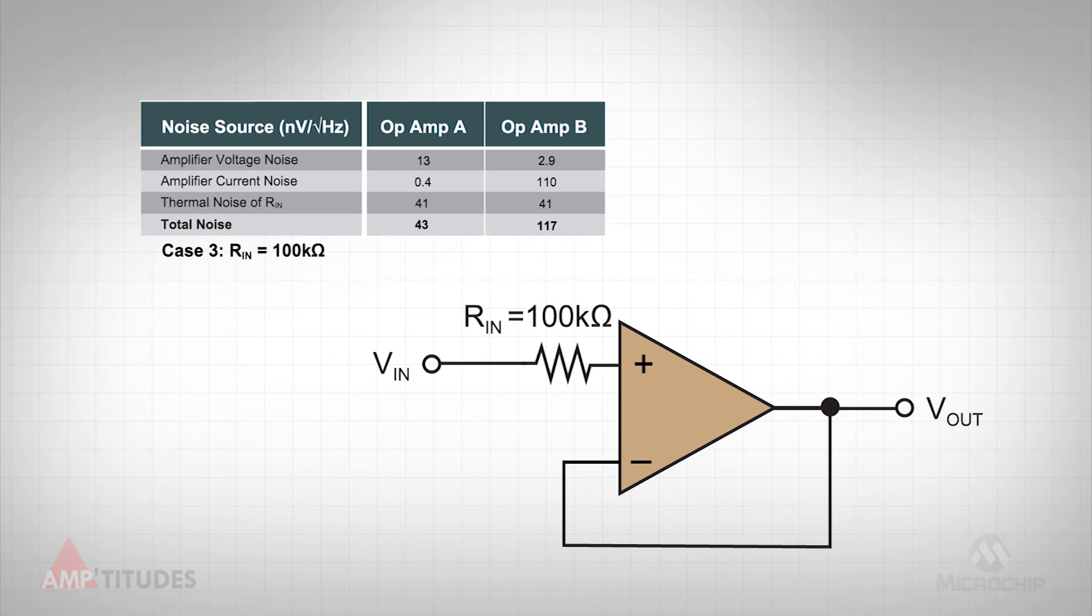Finally, let's increase the input resistance to 100 kilo-ohms. The current noise of amplifier B now becomes the dominant noise source, resulting in much worse noise performance relative to op amp A.